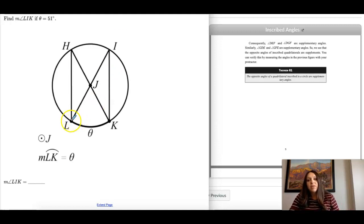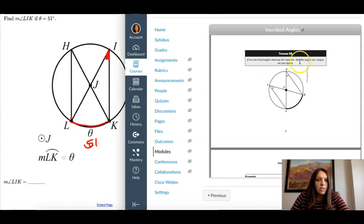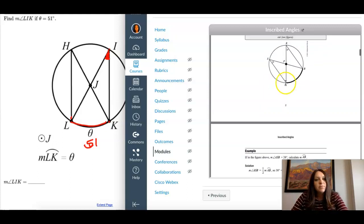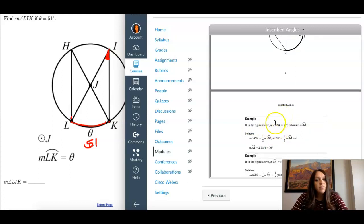Find the measure of angle L to I to K, so right here, I. If theta is 51 degrees. So here, theta is an arc length. And I know I saw a theorem that looked like this. So if two inscribed angles intercept the same arc, then the lengths are congruent. So the measure of ASB, we want to calculate the arc. So see what I'm doing, I'm looking at an example, and then I'm going to figure out what the arc length would be or what the angle would be.